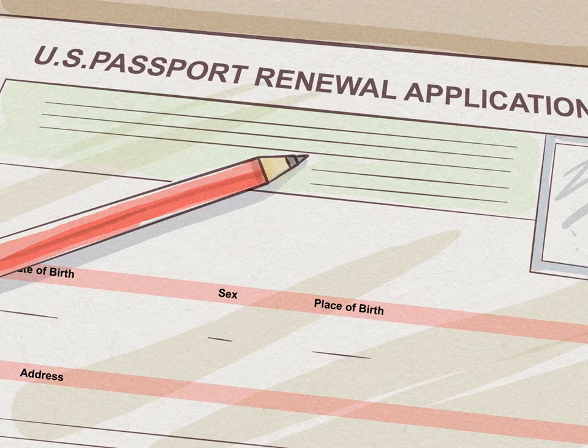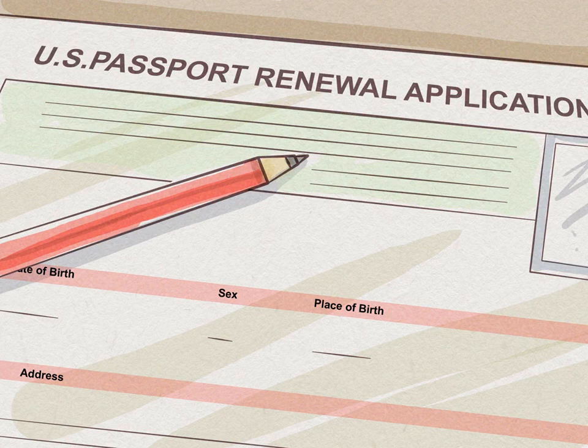Renew your passport if necessary. Your passport must be valid for six months past the date you intend to stay in the U.S. For example, if your visit ends June 12, then your passport should be valid until at least December 12. There are many exceptions depending on your country. You can see a list of countries exempted from this requirement on the Customs and Border Patrol website.